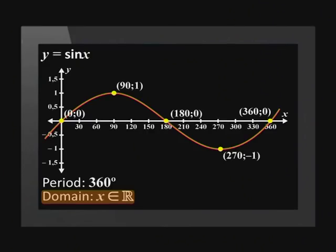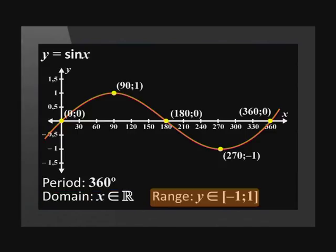Now remember that when we are asked for the domain of the graph, we need to state all the possible values of x that the graph includes. The range is all the possible values of y. The domain of a standard sine graph is x is an element of real numbers. The range of the standard sine graph is y is an element of [-1,1].